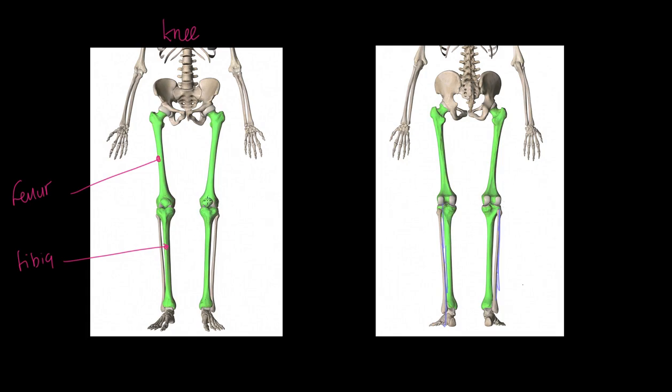Notice the fibula at the posterior back view of this bone - it does not connect to the knee, it does not articulate at the knee. I want to stress the patella is part of the knee joint but does not actually form the joint itself. It sits above the joint.